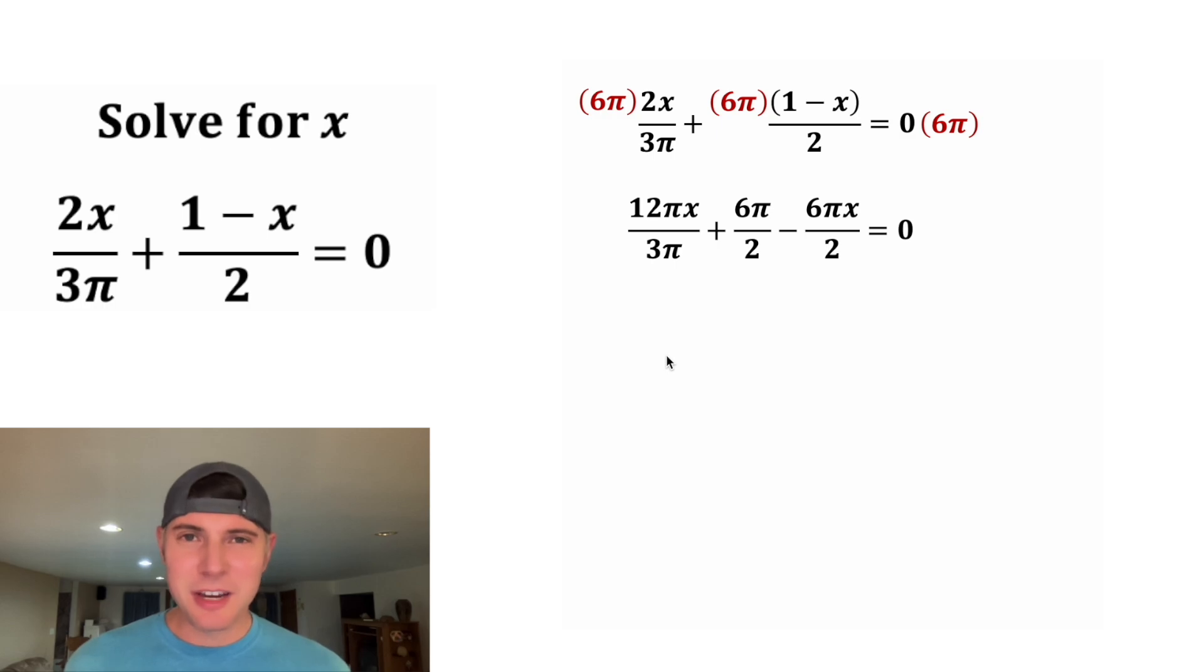Now we can simplify things to get rid of the denominators. For this first term, the 2 π's will divide each other out, and 12 divided by 3 is equal to 4. For this term, 6 divided by 2 is equal to 3. And for this term, 6 divided by 2 is equal to 3. Now we have 4x plus 3π minus 3πx equals 0.